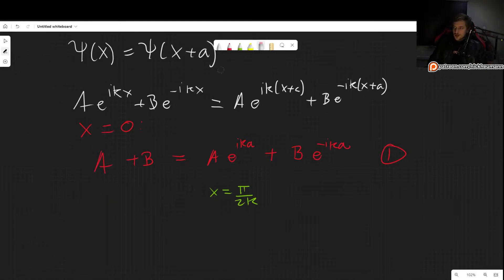Plugging it in, we get Ae^(iπ/2) + Be^(-iπ/2) equals Ae^(iπ/2)e^(ika) + Be^(-iπ/2)e^(-ika).